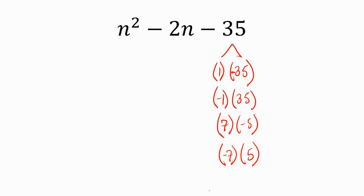Now we need to pick the factors that add up to this number in the middle. What I see a lot of people doing is picking this one right here and saying the answer is (n + 7)(n - 5).